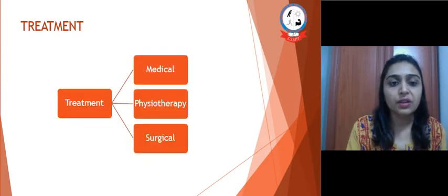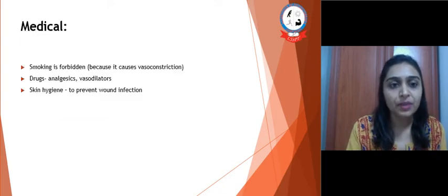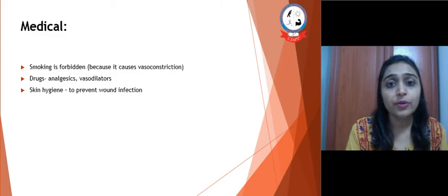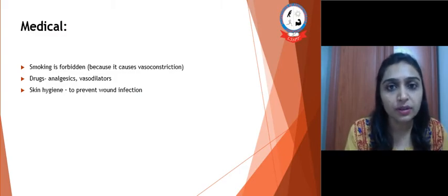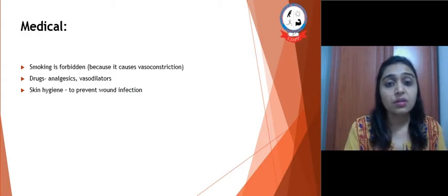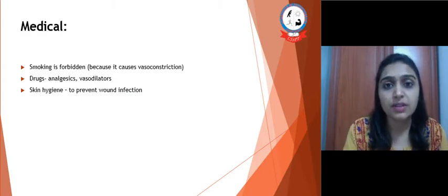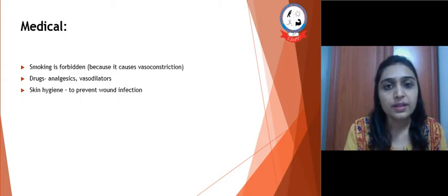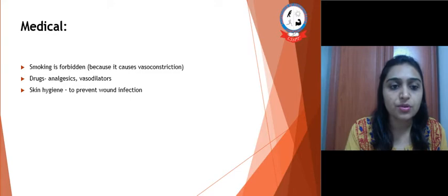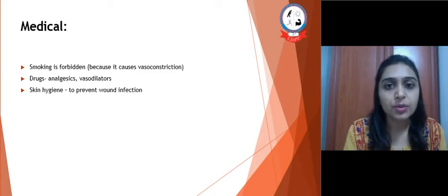Treatment can be divided into medical, physiotherapy, and surgical. For medical treatment, the first and foremost advice is to stop smoking — smoking is forbidden entirely, as it causes vasoconstriction, further reducing the size of the lumen and leading to ischemia of the distal part. Drugs used include analgesics for pain relief, vasodilators, and medications to prevent wound infection.